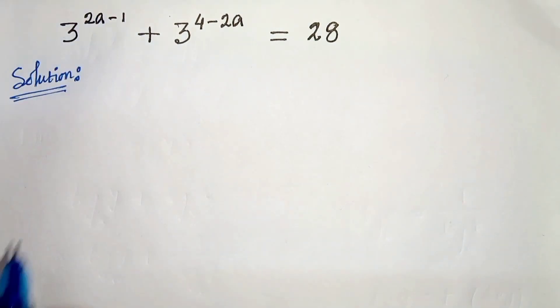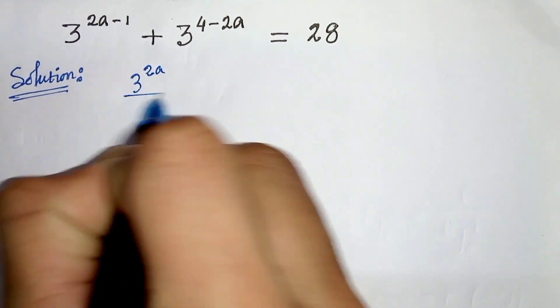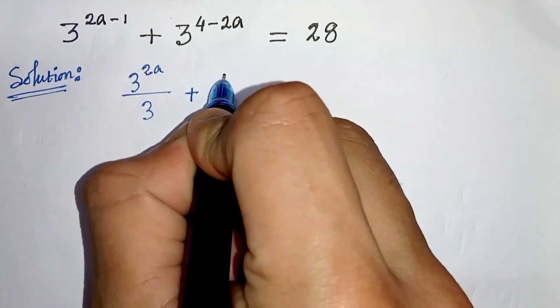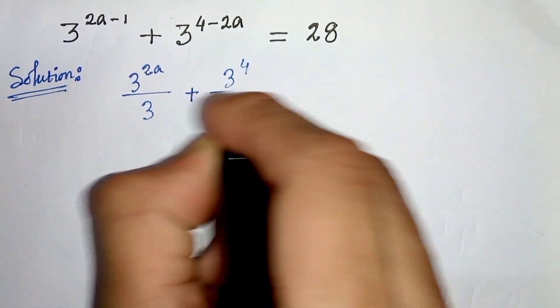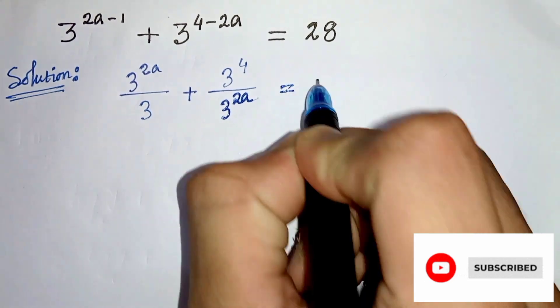First of all we can write 3 to the power 2a minus 1 as 3 to the power 2a divided by 3, and 3 to the power 4 minus 2a can be written as 3 to the power 4 divided by 3 to the power 2a equals 28.